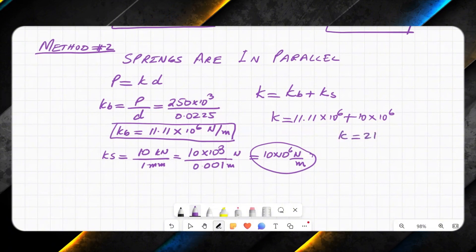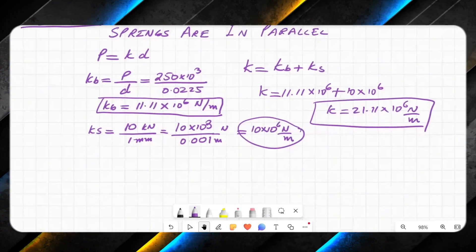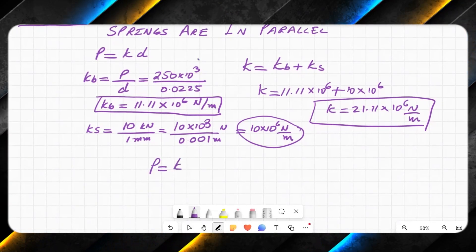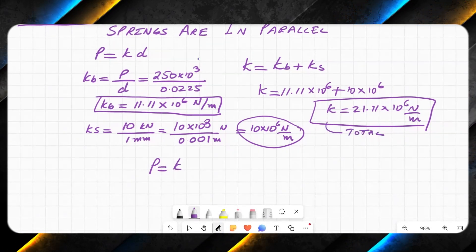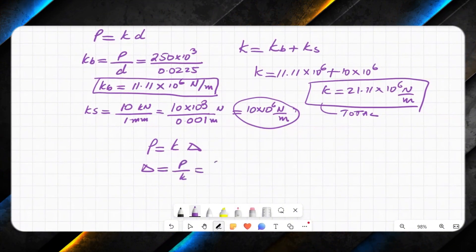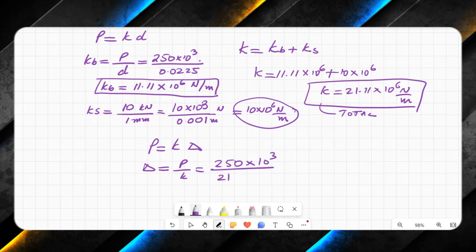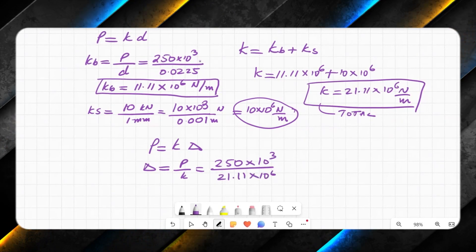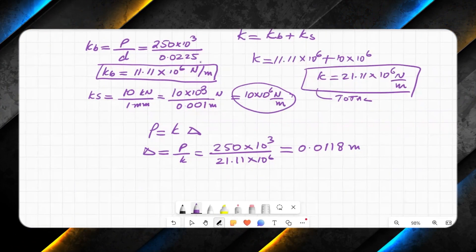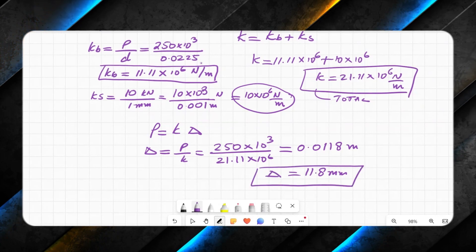This will give me 21.11 × 10^6 newton per meter. This is the overall stiffness of the system. And P equals k total times delta, so delta will be equal to P over k, where P is 250 kilonewton × 10³ and k is 21.11 × 10^6. This will give me 0.0118 meter, or I can say it's 11.8 millimeter.